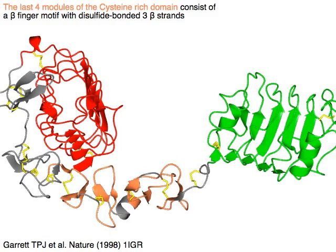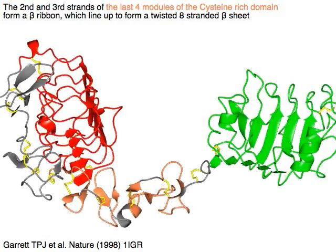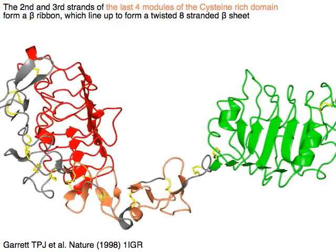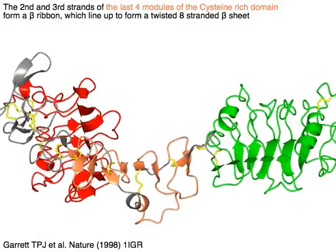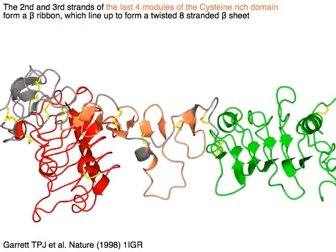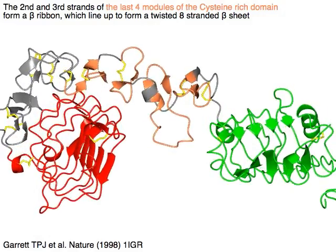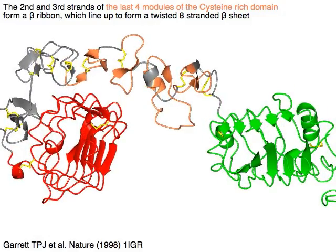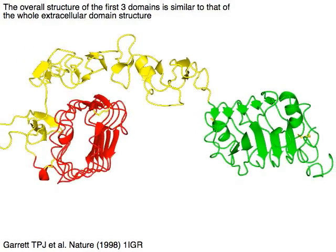The second and third strands of the last four modules of the cysteine-rich domain form a beta ribbon, lining up to form a twisted eight-stranded beta sheet. The overall structure of the first three domains is similar to that of the whole extracellular domain structure.